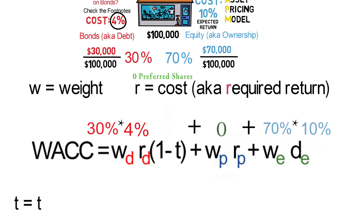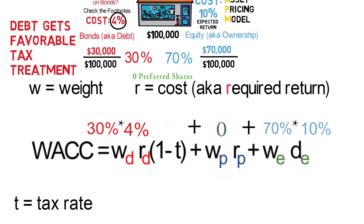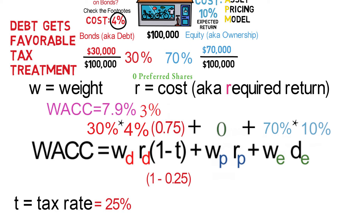Jumping back to the debt for a second — the (1 - T). T stands for tax rate. This only applies to the debt because debt has a unique feature of usually having interest payments that are tax deductible. The 4% is an expense, but that expense is before taxes. So if their tax rate is 25%, then you take one minus T, where T is 0.25, and you end up with 0.75. This is the tax adjustment you're making to the cost of debt. So for our example, after accounting for the tax benefits of debt, this makes the cost of debt just 3%.